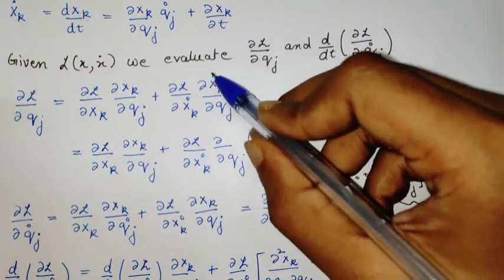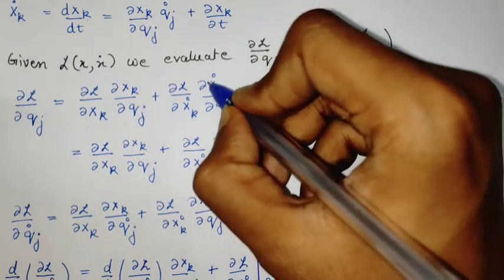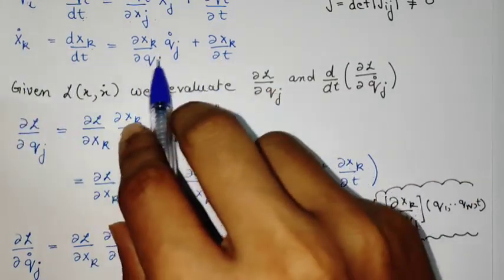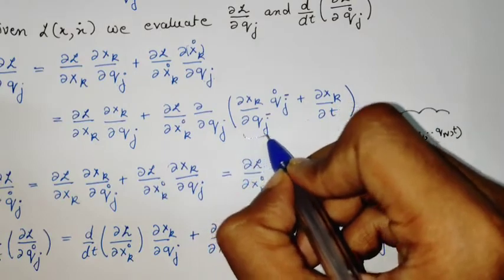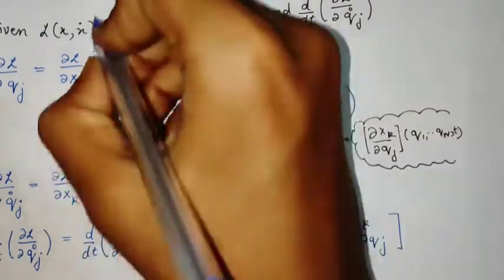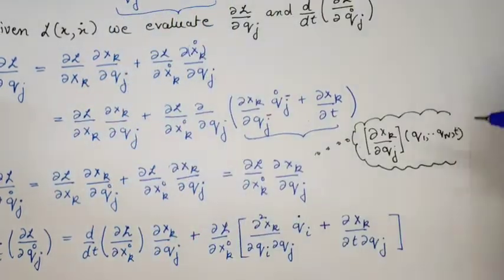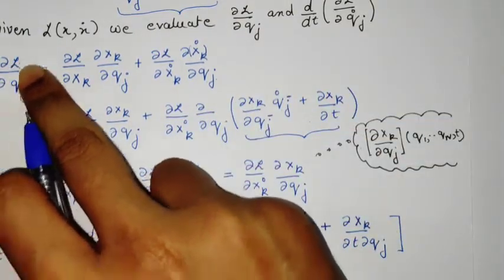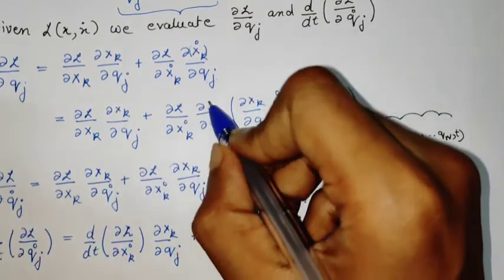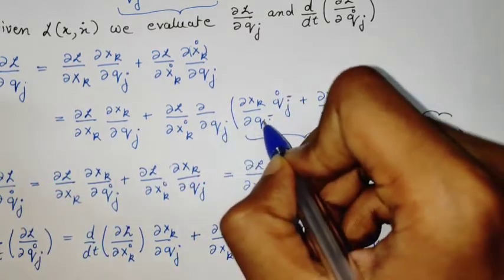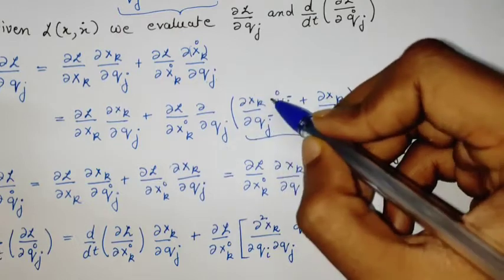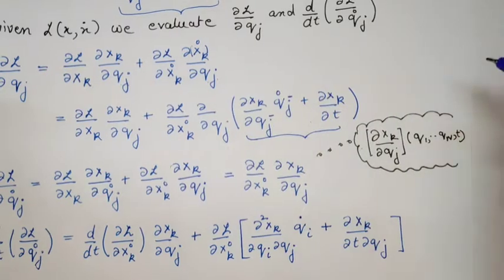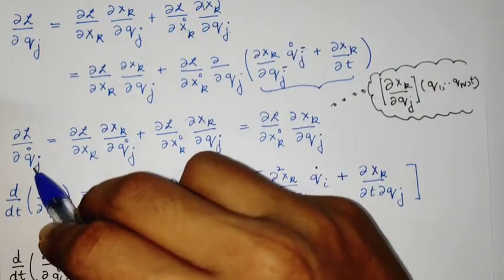We substitute the expression for x_dot from the chain rule into this expression. After doing so, we have almost fully evaluated ∂L/∂qj. The last step is to push the derivative inside, and we see we get second derivatives with respect to xk appearing in both places.